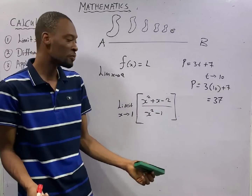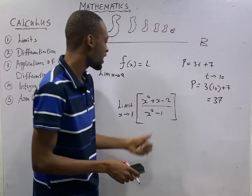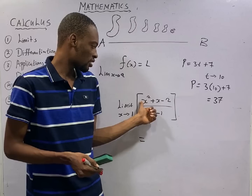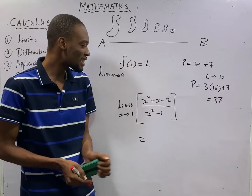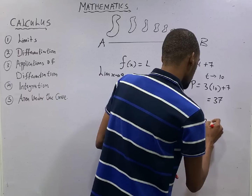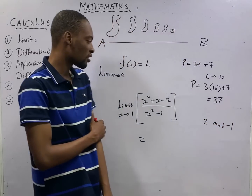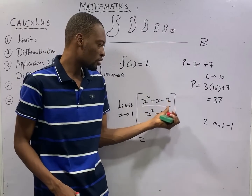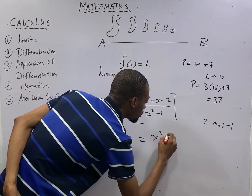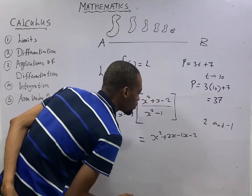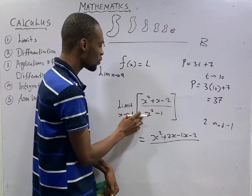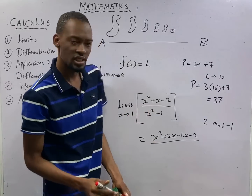What do we do? We factorize or simplify the expression. For the numerator s² + s − 2, the two numbers that multiply to give −2 and add to give +1 are 2 and −1. So factorizing: s² + 2s − 1s − 2. For the denominator, if you put 1 in s² − 1, you also get 0, so it also needs factorization.